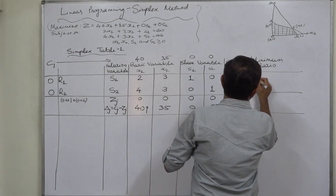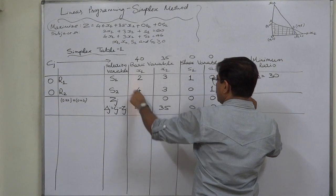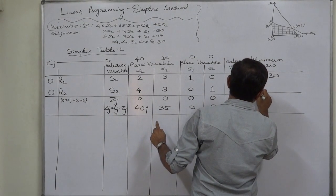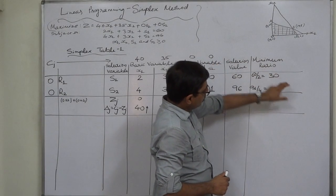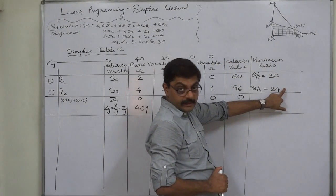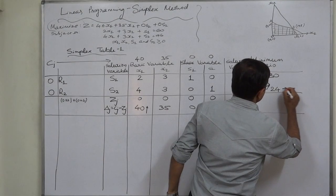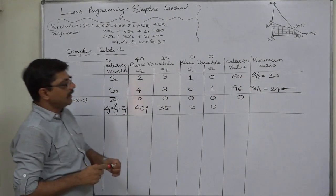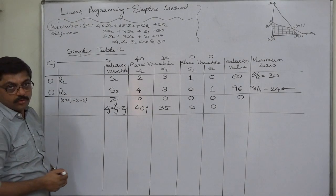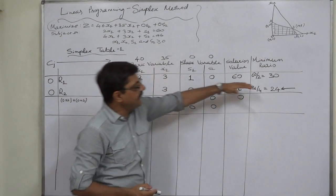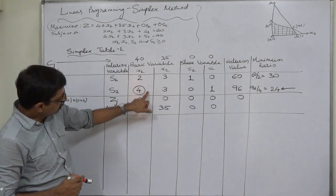The role of the key column is that the solution values are divided by the respective elements in the key column. So 60 is divided by 2, giving a ratio of 30, and 96 is divided by 4, giving a ratio of 24. As the title suggests, the minimum ratio is selected — out of 30 and 24, we select 24. Row R2 becomes the outgoing row, and the common element of the key column and key row is highlighted as the key element.